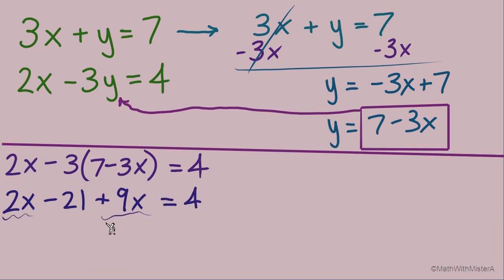Now like terms, 2x plus 9x equals 11x. Bring down minus 21 equals 4 and we're just going to wrap this one up, add 21 to both sides. 11x equals 25.